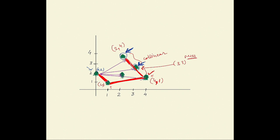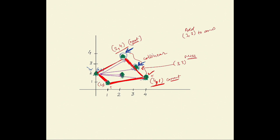Whenever we find the next reference point — for example (2, 4) — we also include all trees that lie in between the current reference point (4, 1) and the next reference point (2, 4). So all trees lying in between these two points, we add to our answer — we also add (3, 3). From (2, 4), we find the next reference point, and when the next reference point is the same as the starting leftmost point, our algorithm ends and we break.